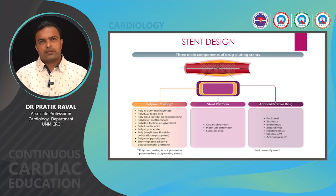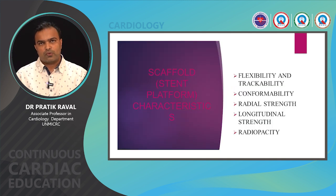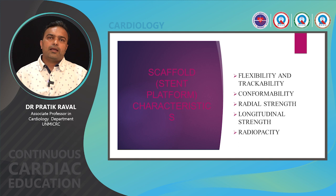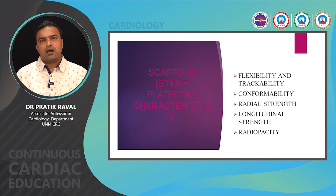A drug eluting stent has three main components: the stent platform, a polymer coating which acts as a vehicle for the drug, and the anti-proliferative drug itself. The majority of stent characteristics — flexibility, conformability, radial and longitudinal strength, and radiopacity — are largely determined by the scaffold characteristics.